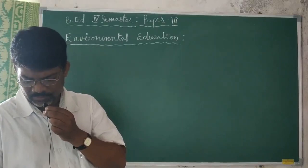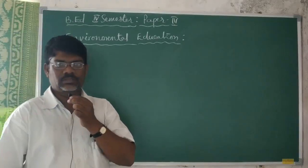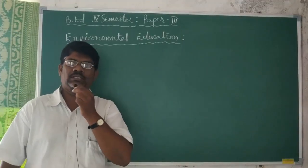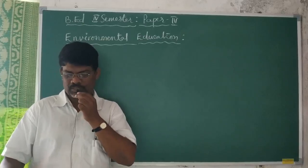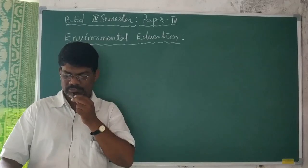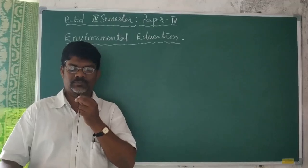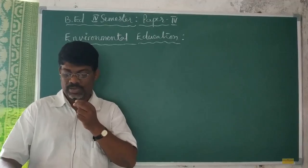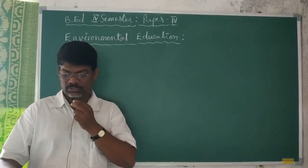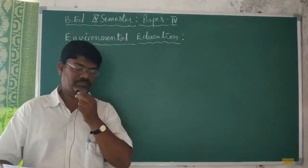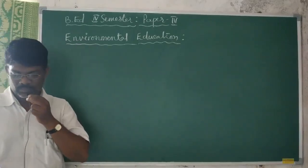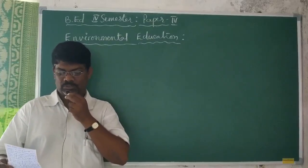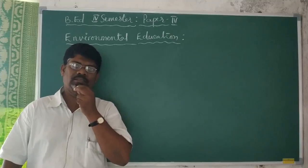Let us know the main components of environmental education. When we look in depth at the environmental education paper, we understand there are different components: awareness and sensitivity to environment and environmental challenges; knowledge and understanding of the environment and environmental challenges; attitudes of concern for the environment and motivation to improve or maintain environmental quality; skills to identify and help resolve environmental challenges; and participation in activities that lead to resolution of environmental challenges.